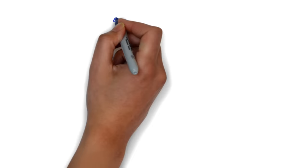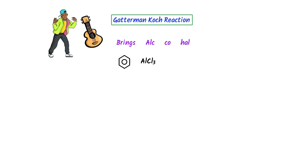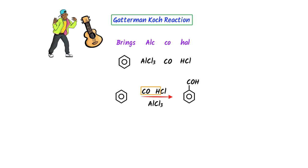Lastly, let me teach you the Gattermann-Koch reaction. Gattermann reminds me of 'Gitarman brings alcohol.' B ring stands for benzene ring, ALC stands for AlCl3, CO stands for CO, and HAL stands for HCl. So the reactants are: benzene ring, AlCl3, CO, and HCl. I select CO and H and add them to the benzene ring — attaching CHO to it — to get benzaldehyde. This is the complete Gattermann-Koch reaction. Try to practice all these 20 reactions every day for a week.